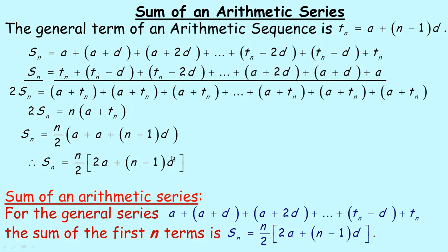We can add the a and a together to get 2a, so this simplifies to n over 2 times (2a plus (n−1)d). Notice what's in the brackets is very similar to the general term for an arithmetic sequence, except it's 2a rather than a. So the sum formula for the first n terms of an arithmetic series is: S_n = n/2 × (2a + (n−1)d).